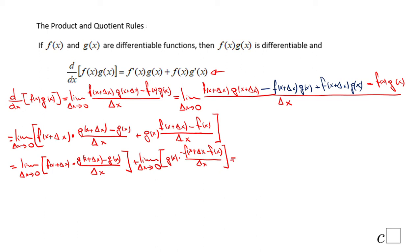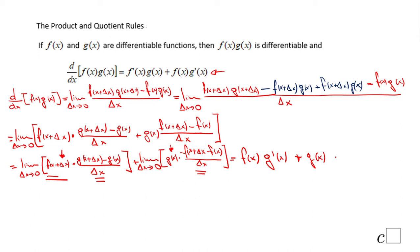Using the property of limits, the limit of a product is the product of limits. Notice that as delta x goes to zero, f(x + delta x) becomes just f(x). And this quotient is nothing else than g'(x). Moving to the second part, as delta x approaches zero we have just g(x), and the last quotient is f'(x). So we finish with the right side of the product rule formula.